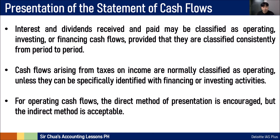For operating cash flows, the direct method of presentation is encouraged because it gives more direct information that is easier for users to understand — explicitly stating cash paid for expenses and cash received from customers. The indirect method, which starts with net income, adds back depreciation, and adjusts for working capital changes, is also acceptable. The direct method is user-friendly, while the indirect method is accountant-friendly since it starts from the accrual-basis income statement and adjusts items to arrive at cash flow from operating activities.